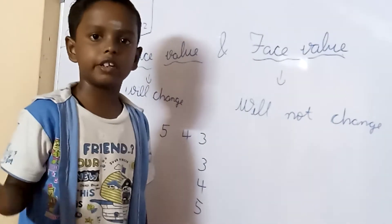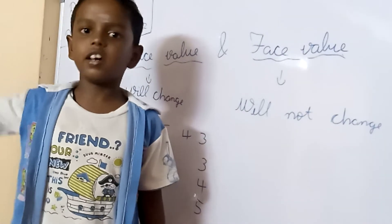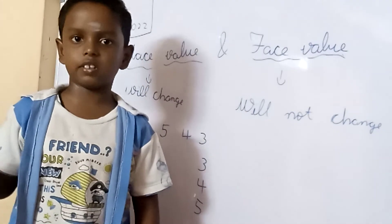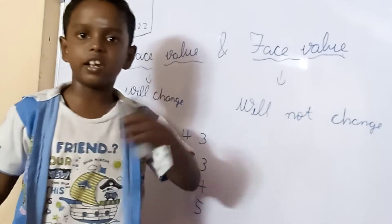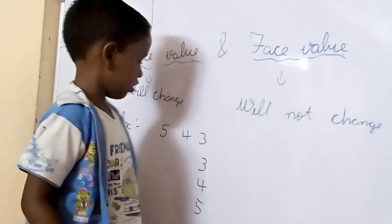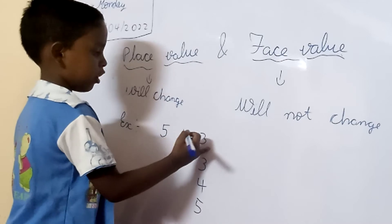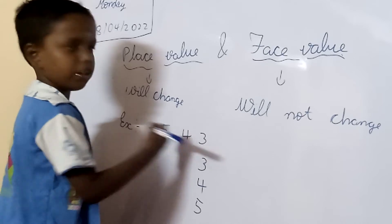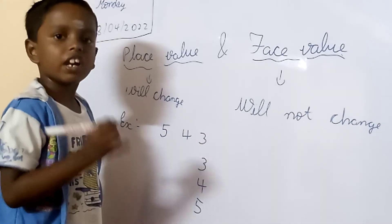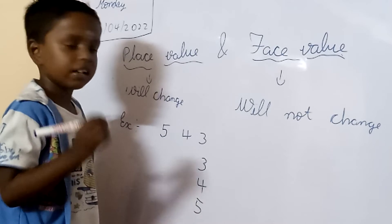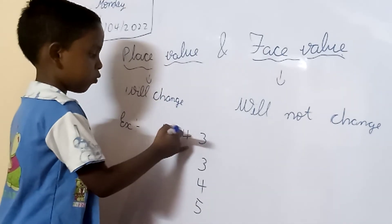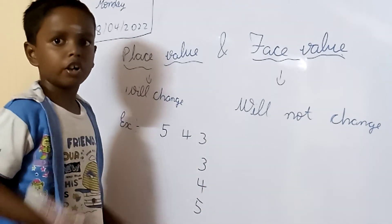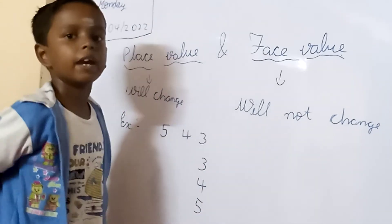For face value, the same digit. We should take from right to left. Don't be confused — we should always start from right to left. Face value of 3 is 3. Face value of 4 is 4. Face value of 5 is 5. Don't be confused to multiply 4 and 5 with the 10th and 100th place. For face value, it will not change. So, we should put the same digit only.